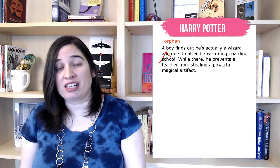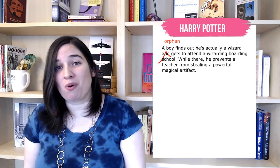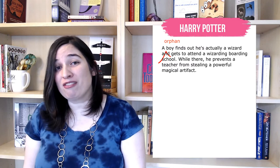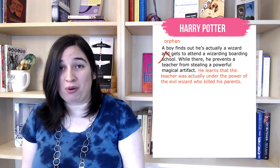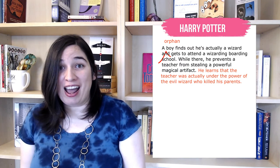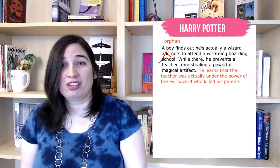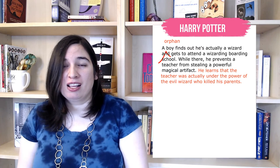Step five is to push the ending to make it more satisfying. We can do this in a couple of ways: add a cool twist, like the boy is mistaken about who the villain is, and try to connect the problem to a chronic, long-standing emotional problem in the character's life. So we could change our premise to: an orphan boy finds out he is actually a wizard and gets to go to a wizarding school. While there, he prevents a teacher from stealing a powerful artifact — and learns that the teacher was actually under the power of the evil wizard who killed his parents. Now we know we've got something really special, something that will come to a great ending and provide a satisfying emotional conclusion.